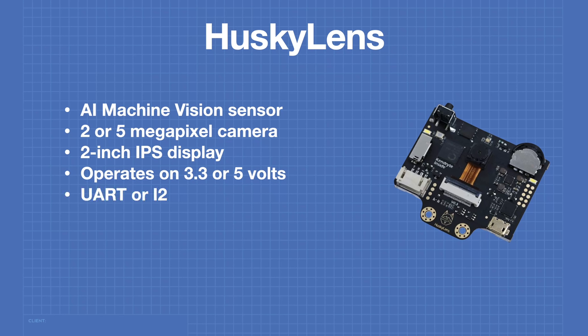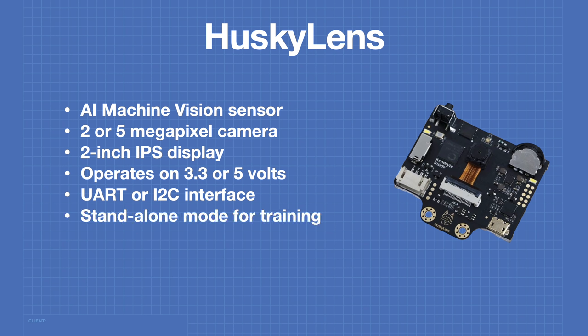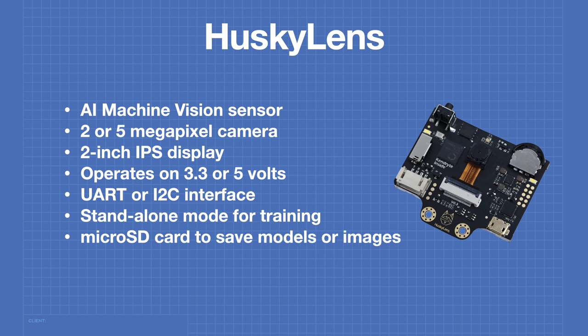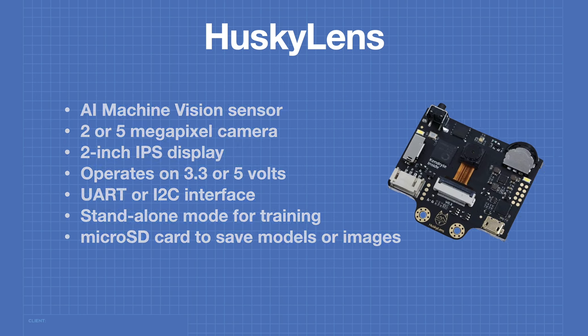The interface on the Husky Lens can be operated as either a serial UART or in I2C mode. The Husky Lens can be used in standalone mode for training purposes without connection to a microcomputer or microcontroller. The device also has a micro SD card that can be used to save training models or images from the camera.